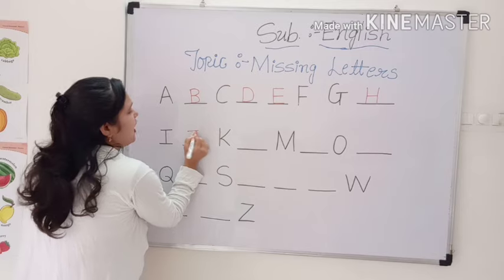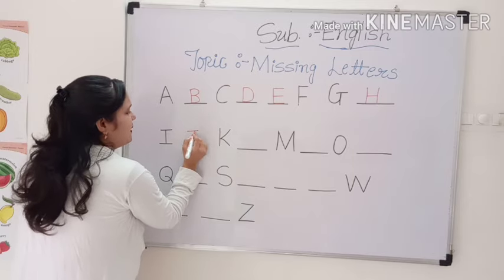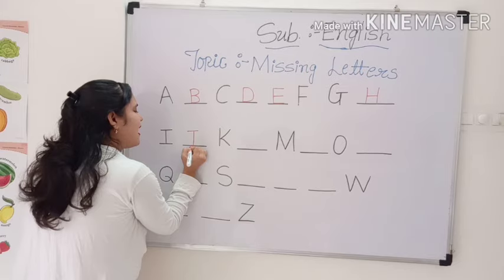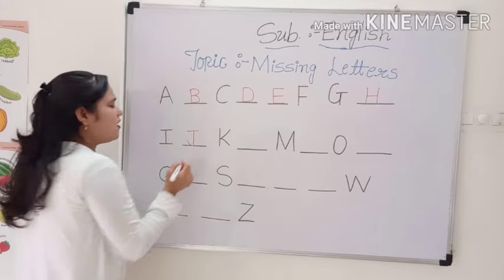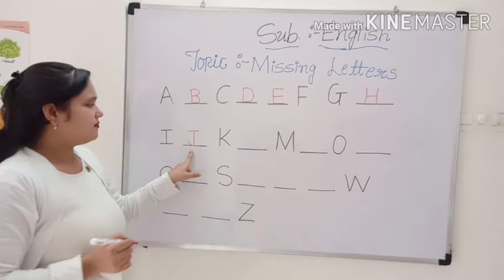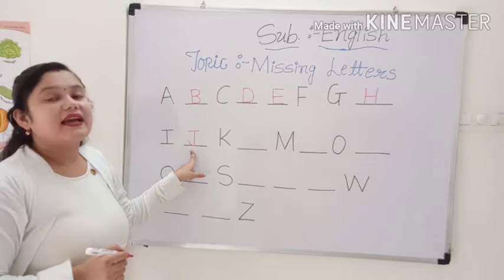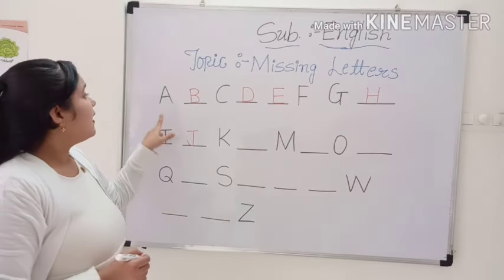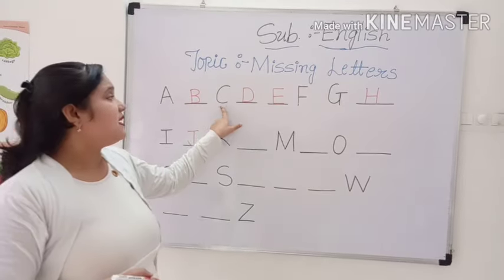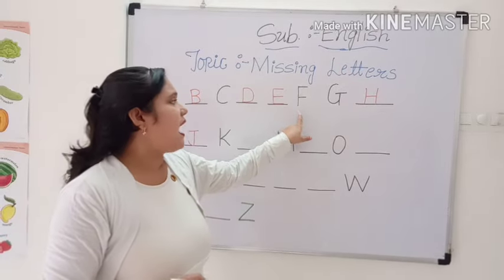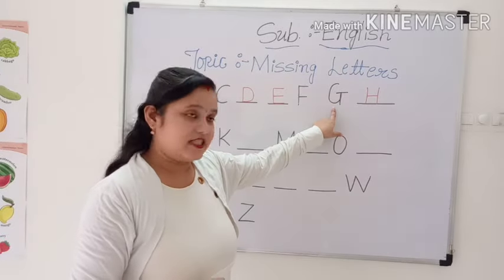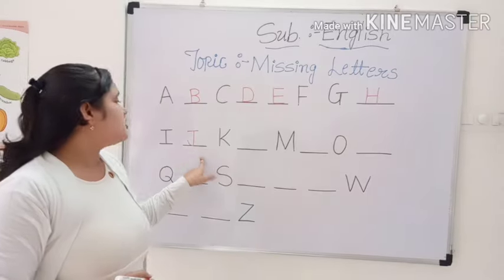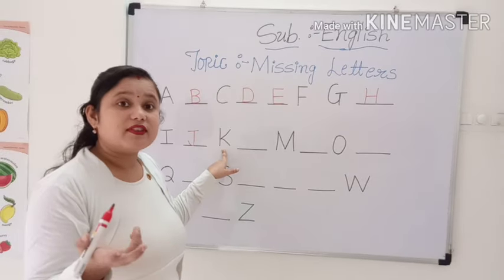J. How can we write J? Sleeping line. Standing line. With a small curve. J. Capital letter J. A, B, C, D, E, F, G, H, I, J, K. After that, which letter comes after K?